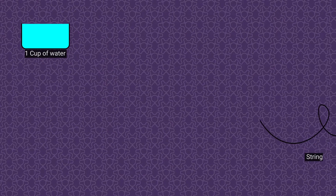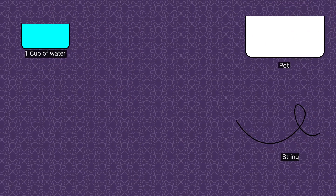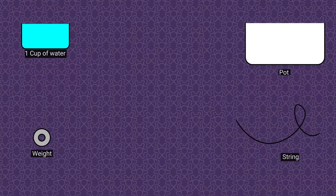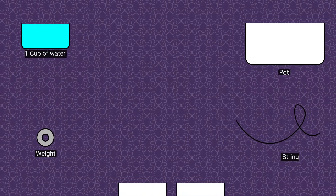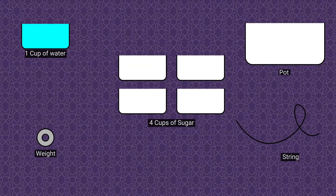And we can make them of our own with a string, a pen, water, and a jar. For this experiment you will need a cup of water, a string, a pot, a weight, and 4 cups of sugar.